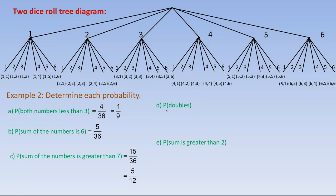For D, doubles means the two numbers are the same. So we have one-one, two-two, three-three, four-four, five-five, and six-six — six of them altogether. The chance of getting doubles is six out of 36, which reduces to one sixth.